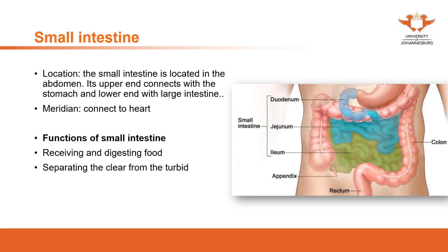Because the function of the small intestine is under the function of the spleen, in our series we focus more on the zang organs. That's why disorders of the small intestine, such as diarrhea or abdominal pain - even those caused by the large intestine - we will often focus on the spleen, because the function of the small intestine is included in the function of the spleen. Separating the clear from the turbid actually happens in the same process as receiving and digesting food.